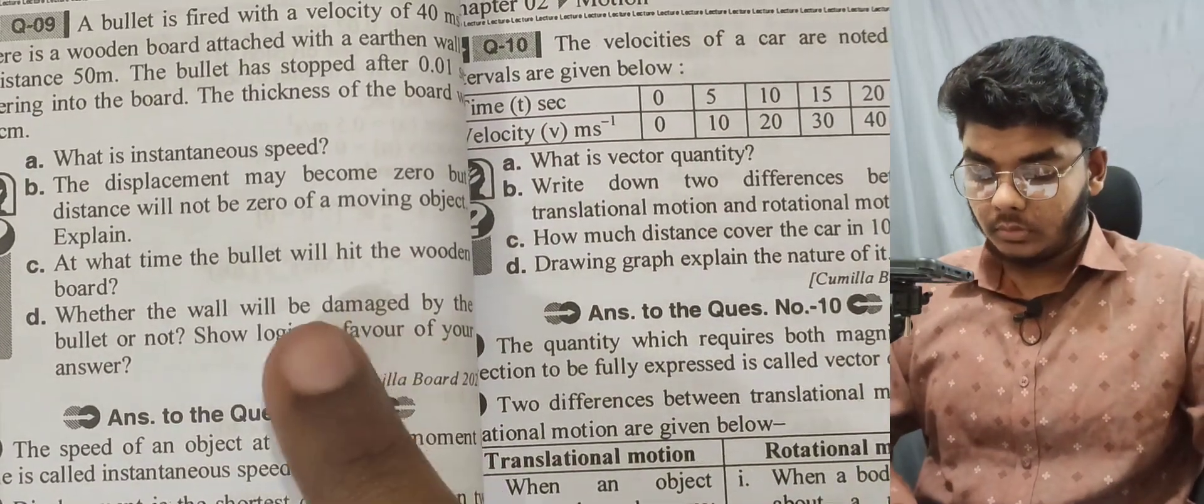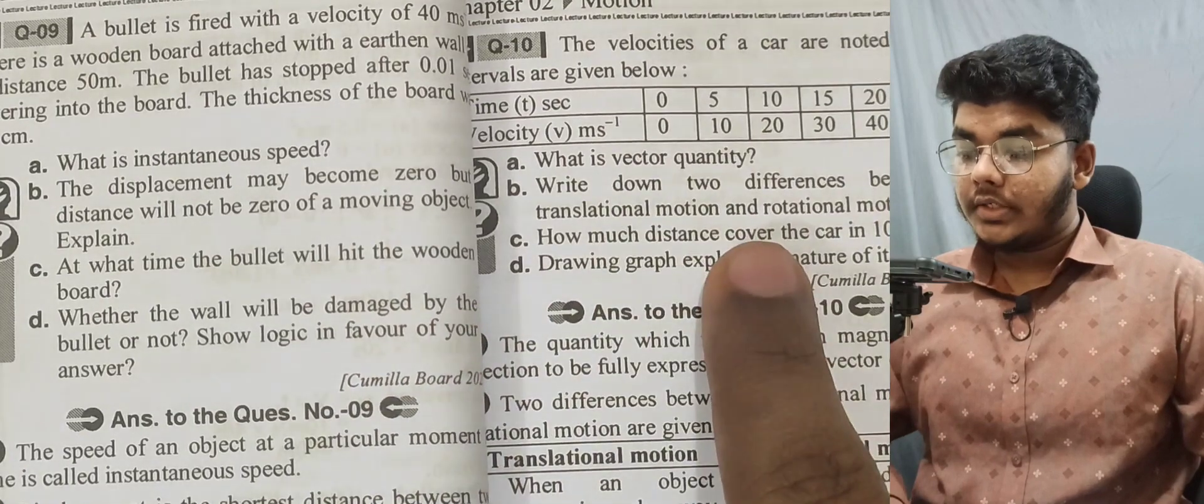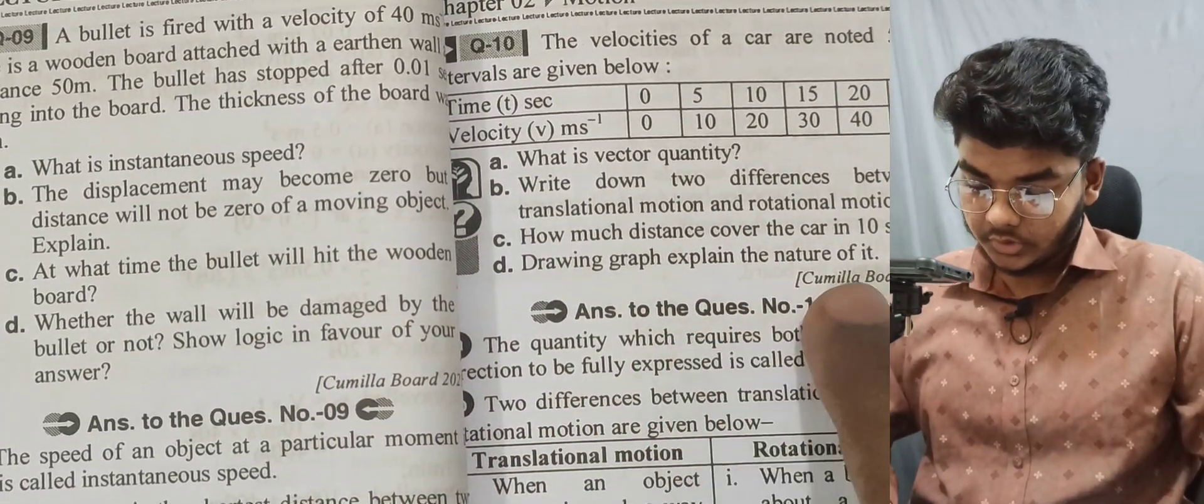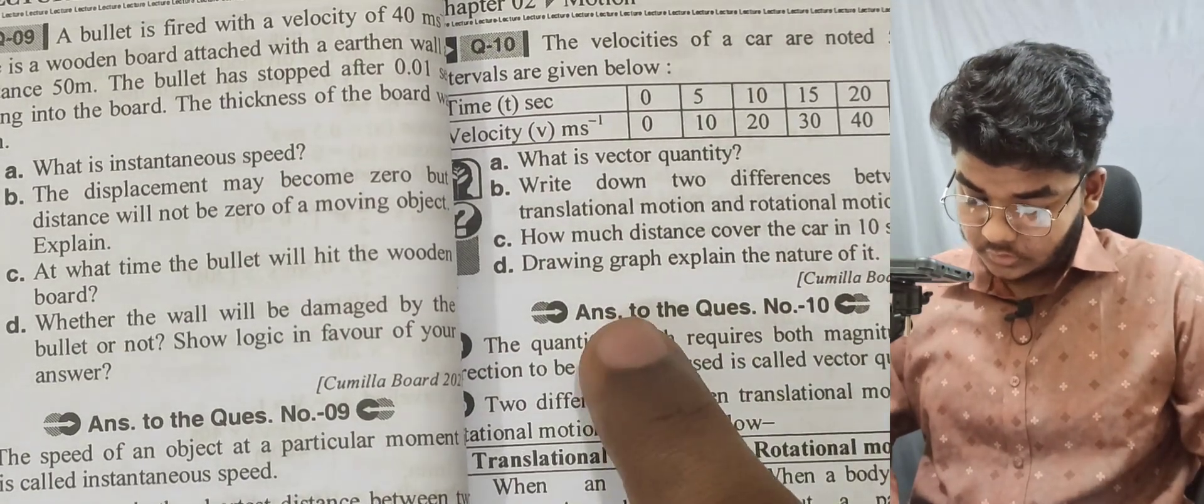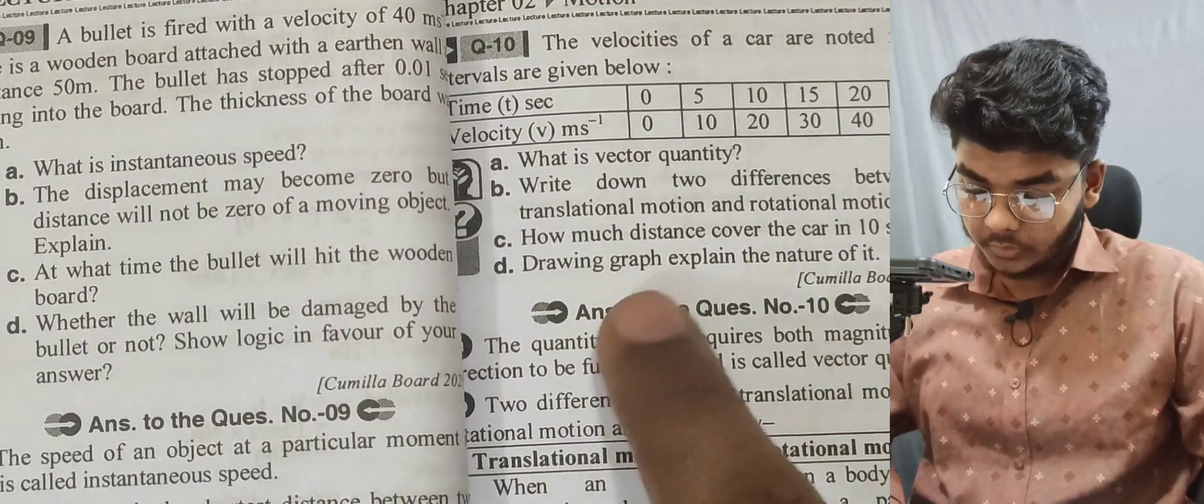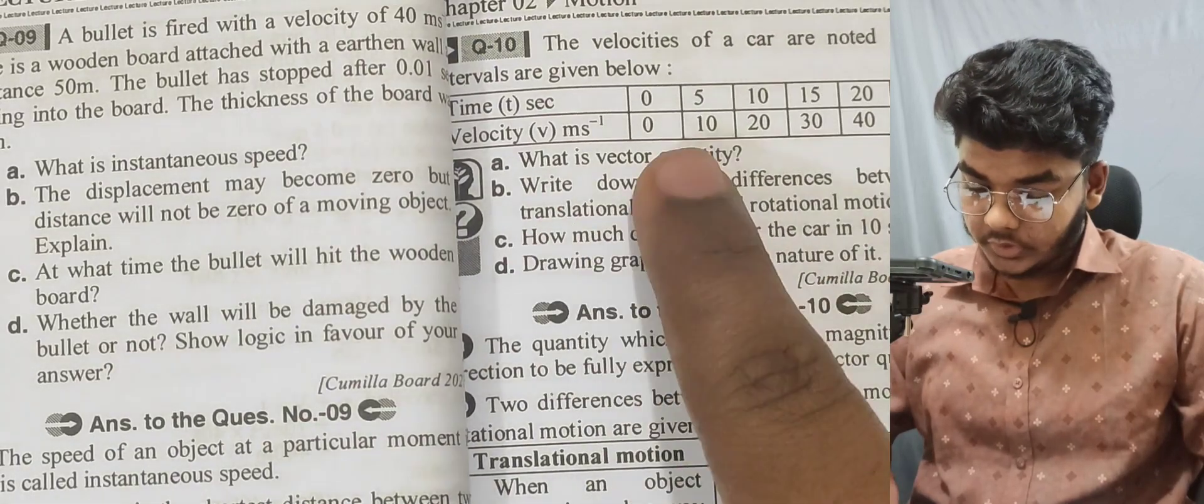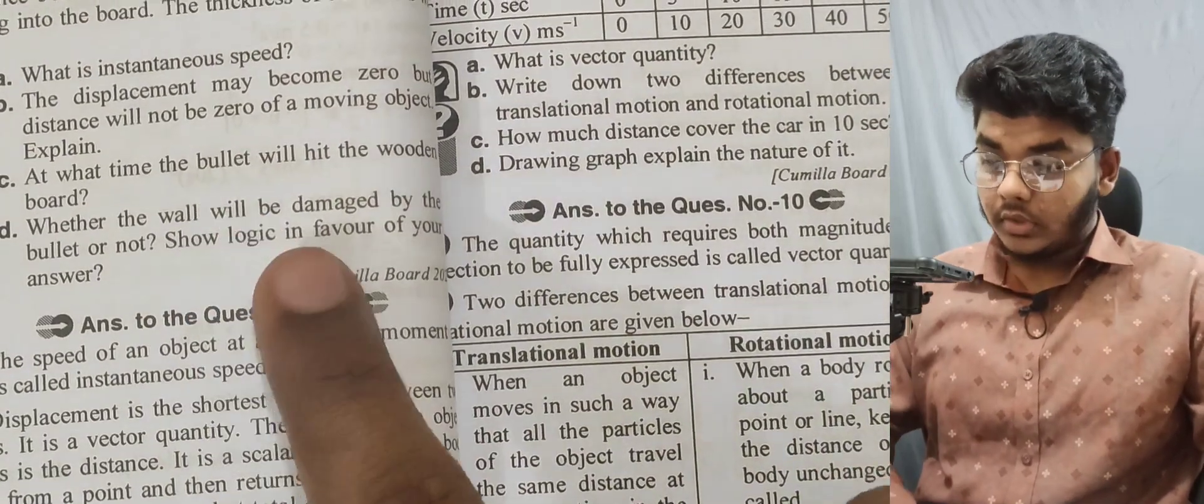Questions 9 and 10: A bullet is fired with velocity of 40 meters per second. Explain the difference between translational motion and rotational motion. How much distance does the car cover in 10 seconds? Draw a velocity-time graph.